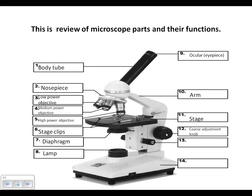Part twelve is the coarse adjustment knob. It's the large knob and it moves the stage up and down. The only time you use the coarse adjustment knob is when you are under low power objective. Other than that, you do not use your coarse adjustment knob.